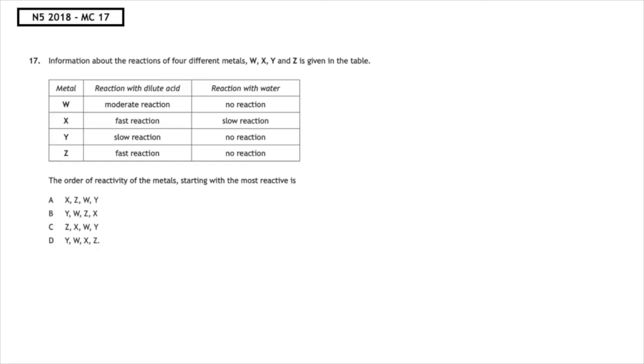This past paper question is from the National 5, 2018, multiple choice, 17. Information about the reactions of four different metals, W, X, Y and Z, is given in the table. The order of the reactivity of the metals, starting with the most reactive, is.